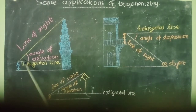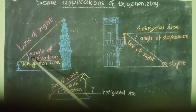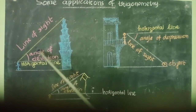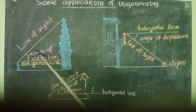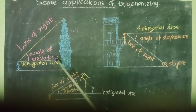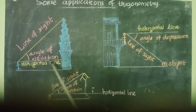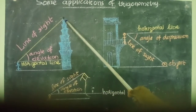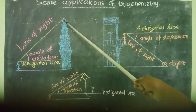Now, this line is the horizontal line. We can see there is an angle formed by this horizontal line and the line of sight. That angle is known as the angle of elevation. The angle of elevation is the angle formed by the horizontal line and line of sight when the point viewed by the observer is above the horizontal line.